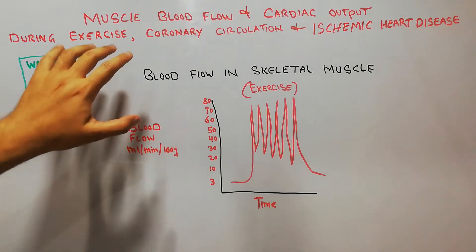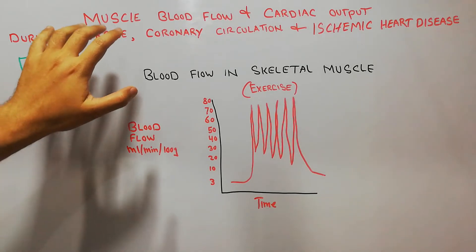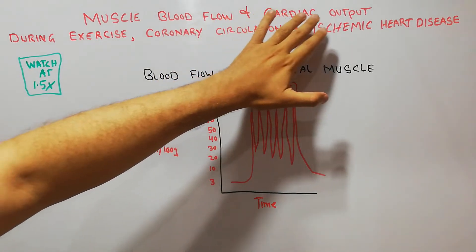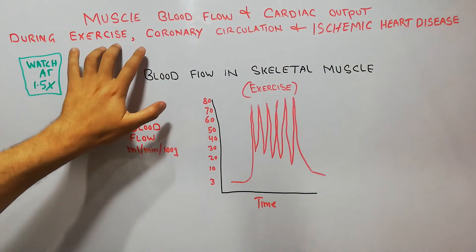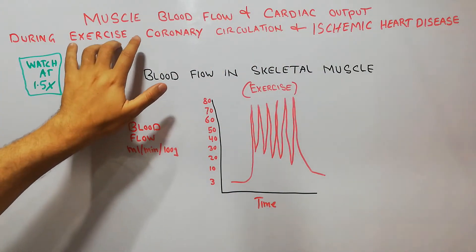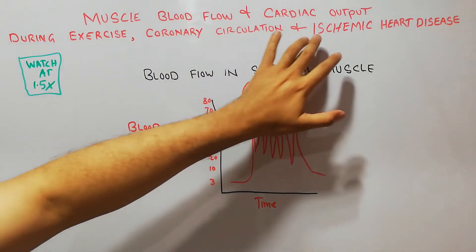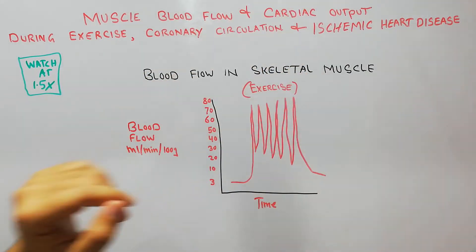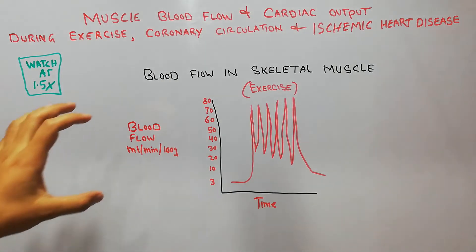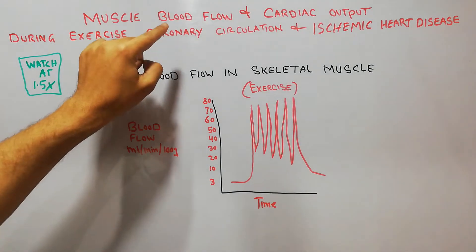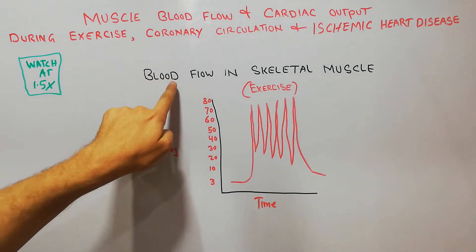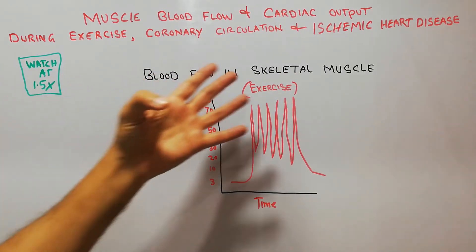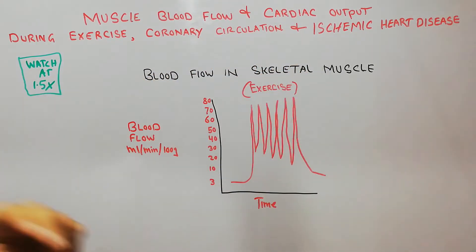Today we are going to start our new chapter about muscle blood flow and cardiac output during exercise, coronary circulation, and ischemic heart disease. The first topic in our new chapter is blood flow in skeletal muscles, and blood flow in skeletal muscles during exercise.